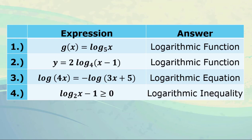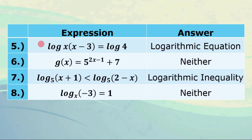For number 5, we have log of x times quantity x minus 3 equals log of 4. They have the same base 10 — logarithmic equation. For number 6, g of x equals 5 raised to 2x minus 1 plus 7. This is not a logarithmic equation, logarithmic inequality, or logarithmic function. So it's neither.